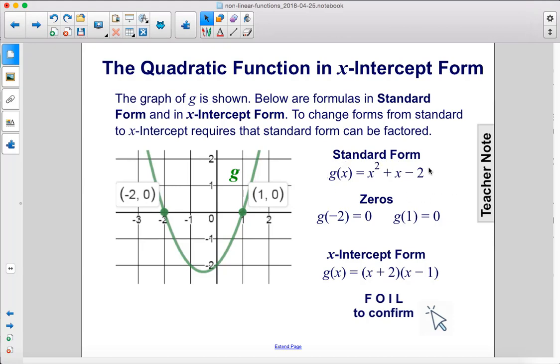Here we have the standard form and the zeros are negative 2 and 1. Therefore we can write it in x-intercept form like this. So negative 2 plus 2 would be 0 and 1 minus 1 would be 0.